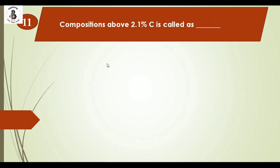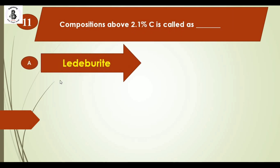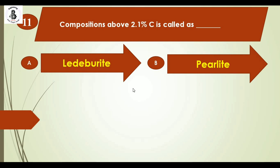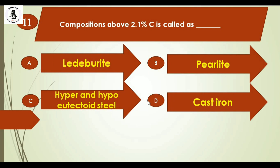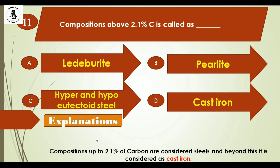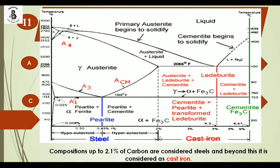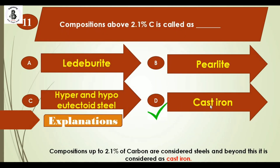Question 11: Compositions above 2.1% carbon are called as — Option A: Ledeburite, Option B: pearlite, Option C: hyper and hypo eutectoid steel, Option D: cast iron. Compositions up to 2% carbon are considered steels, and beyond this they are considered cast iron. As per the iron-carbon diagram, after 2% carbon the material falls in the category of cast iron. The right answer is option D.